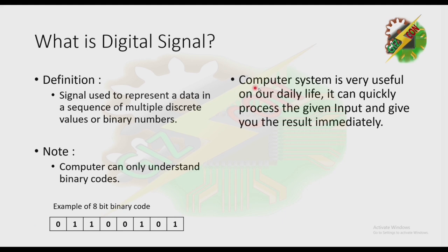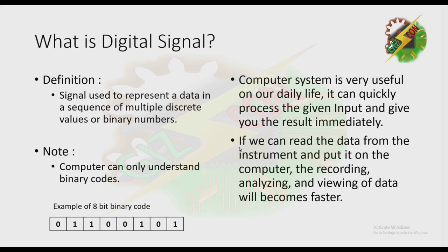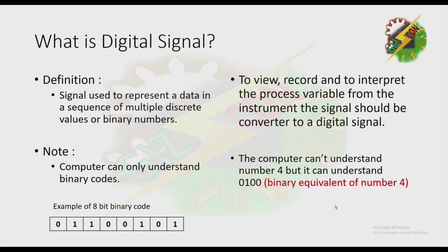This is an example of an 8-bit binary code. Computer systems are very useful in our daily life — they can quickly process the given input and give you the result immediately. One example is a calculator: when you input data, you can get the answer immediately. If we can read data from the instrument and put it on the computer, the recording, analyzing, and viewing of data will become faster.